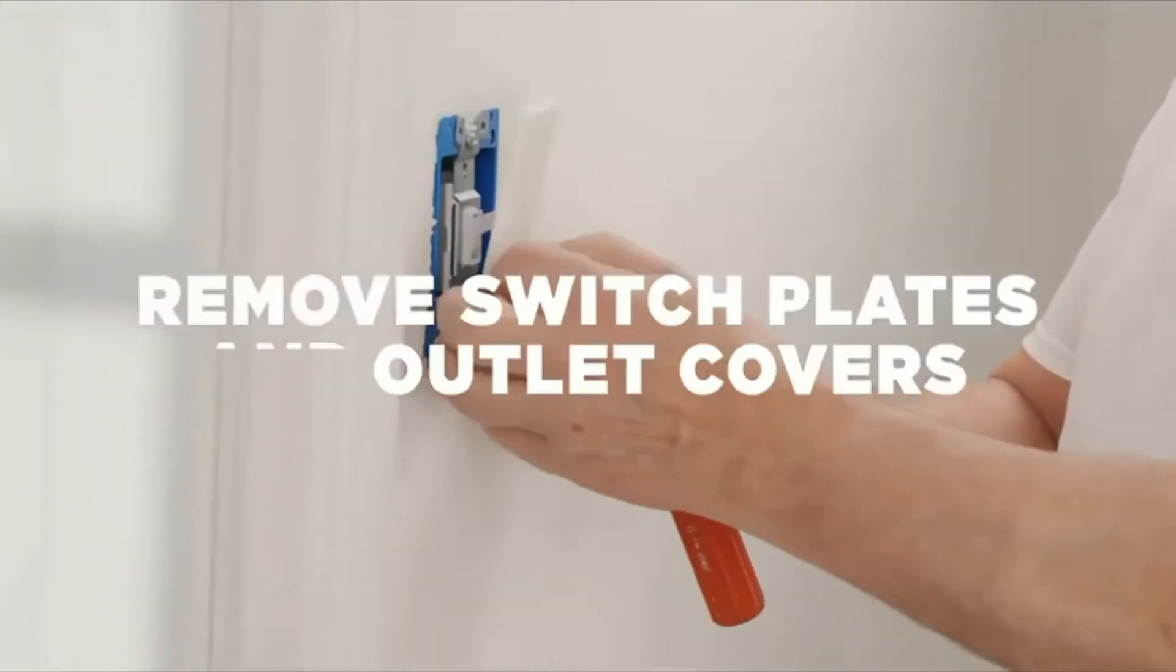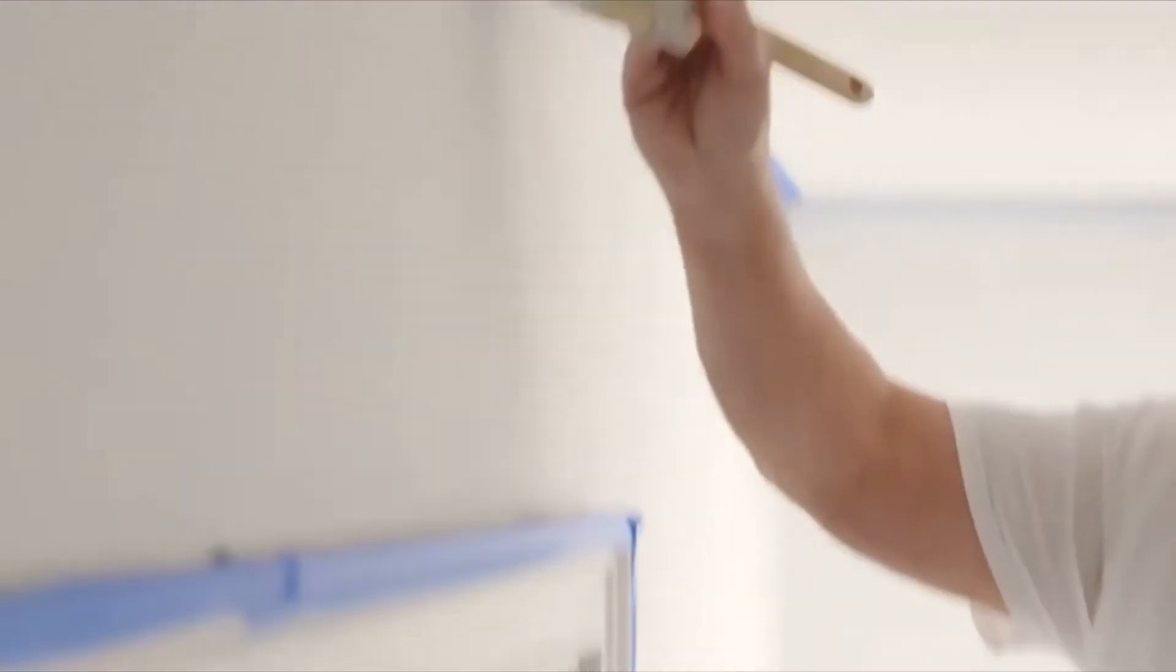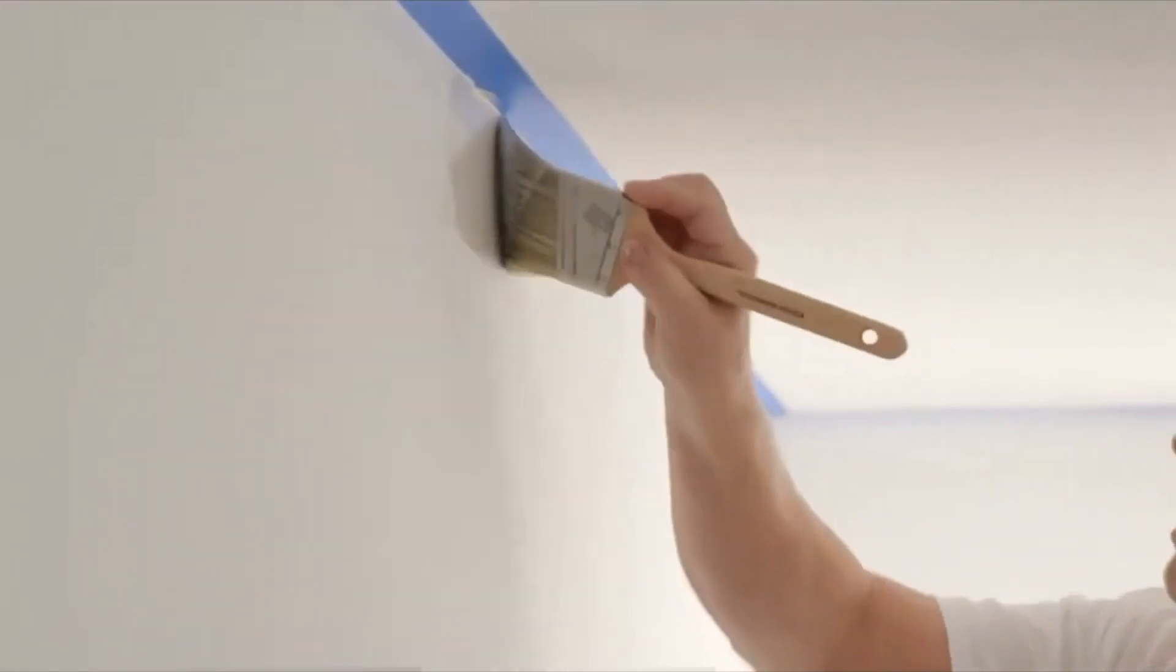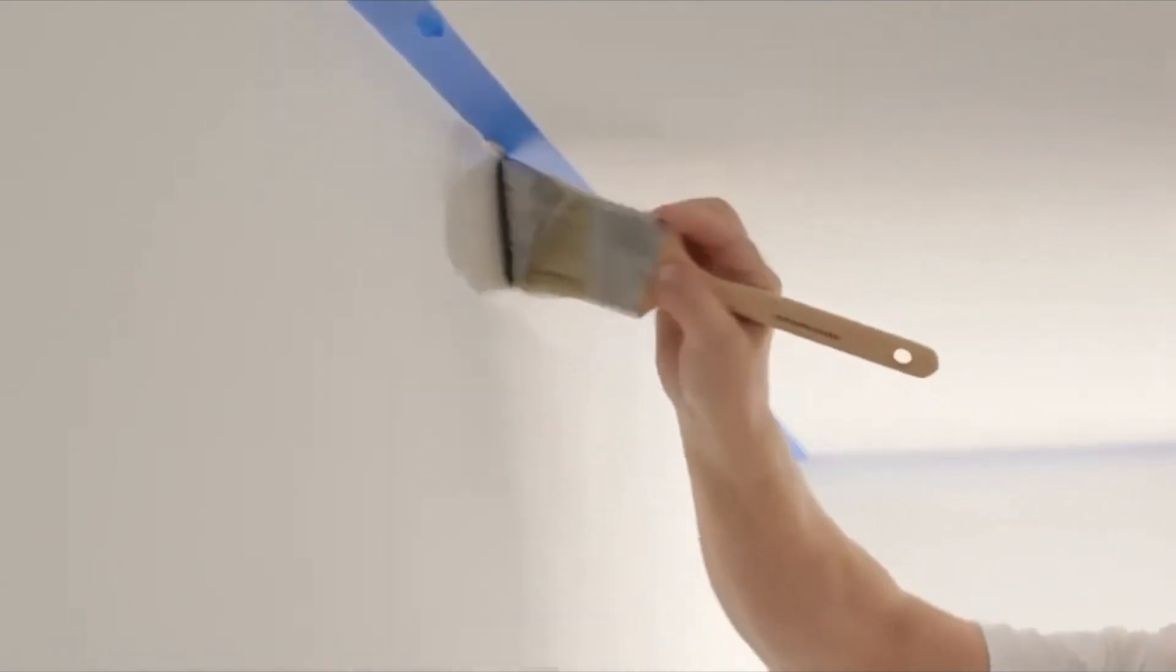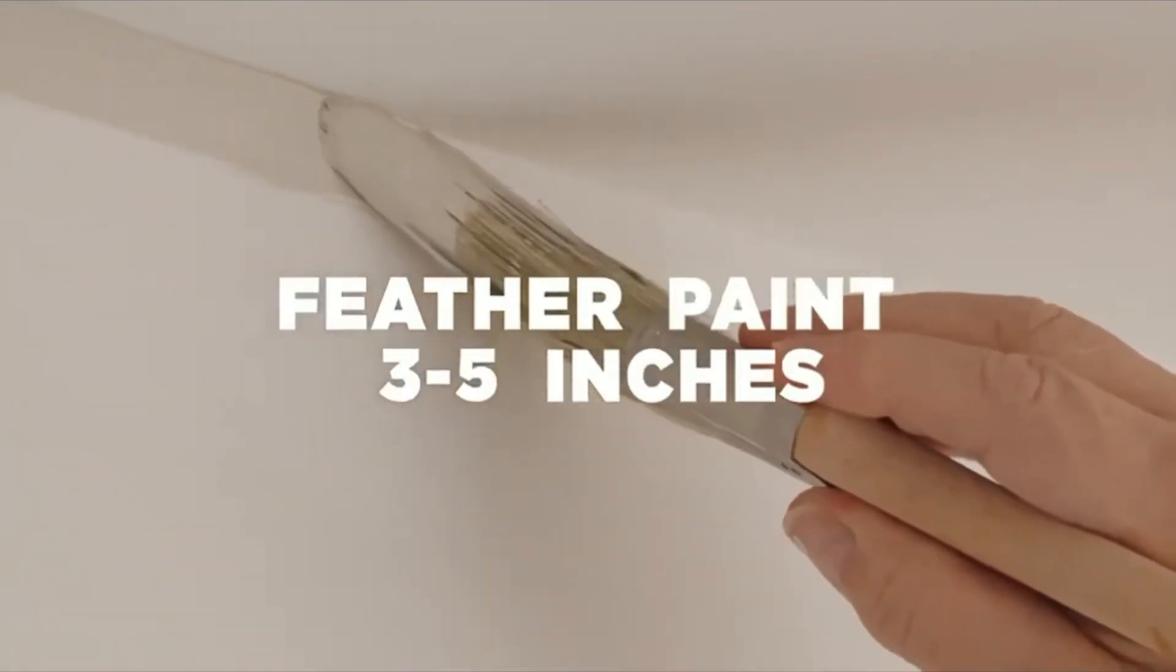Be sure to remove all switch plates and outlet covers and tape over the outlets. Start by carefully painting up against the ceiling line where the wall and ceiling meet with the flat side of the brush. Make sure to avoid painting the ceiling line itself. Start by slowly painting or cutting in the edge, then feathering the paint three to five inches down the wall to achieve a better quality finish.